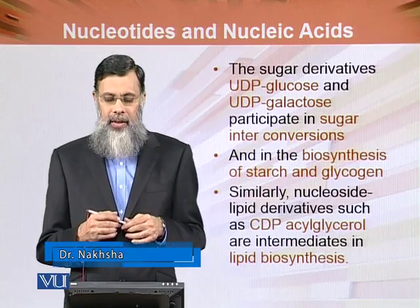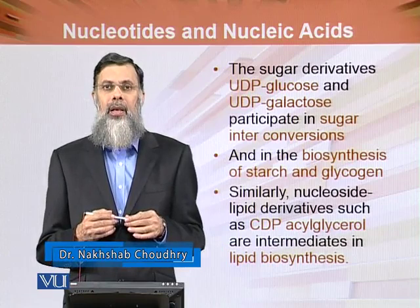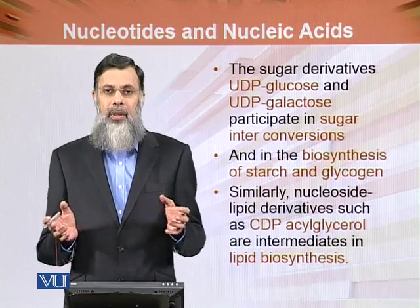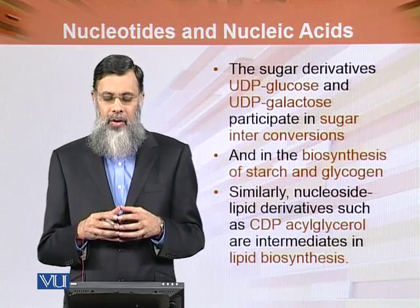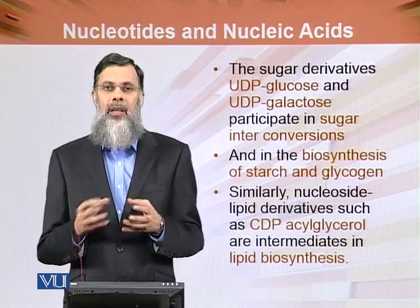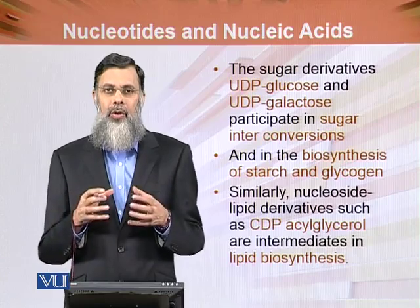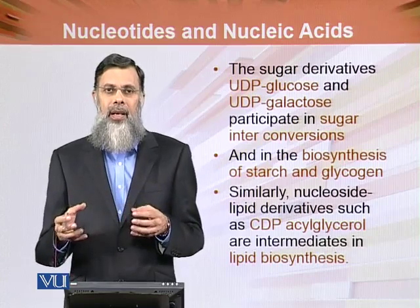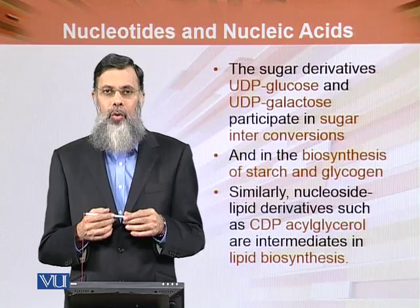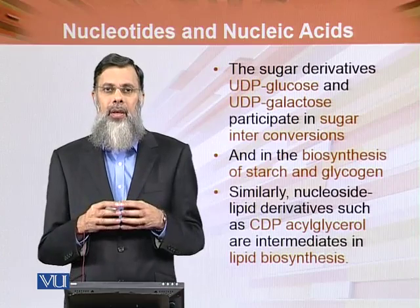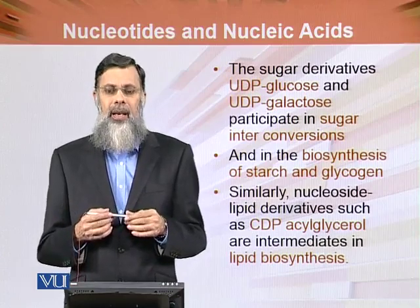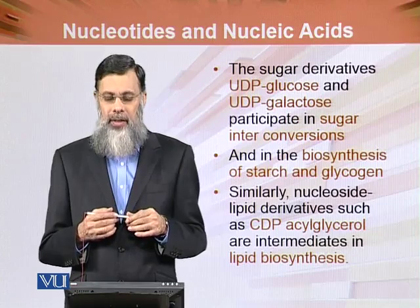The sugar derivatives UDP-glucose and UDP-galactose participate in sugar interconversion. Uridine diphosphate glucose and uridine diphosphate galactose are inter-convertible. Galactose is a milk sugar which is directly absorbed, but its metabolism is not direct — it is first converted into UDP-glucose to be used in the body for biosynthesis of glycogen or starch.